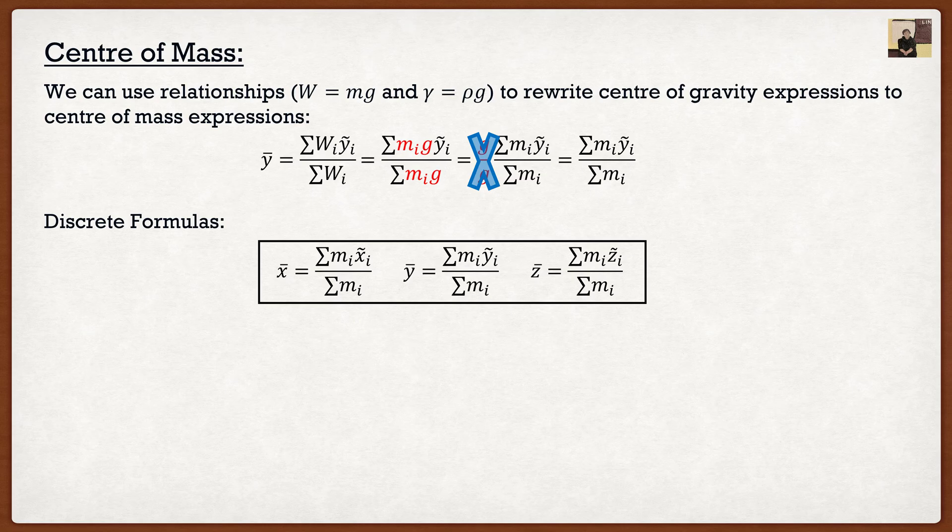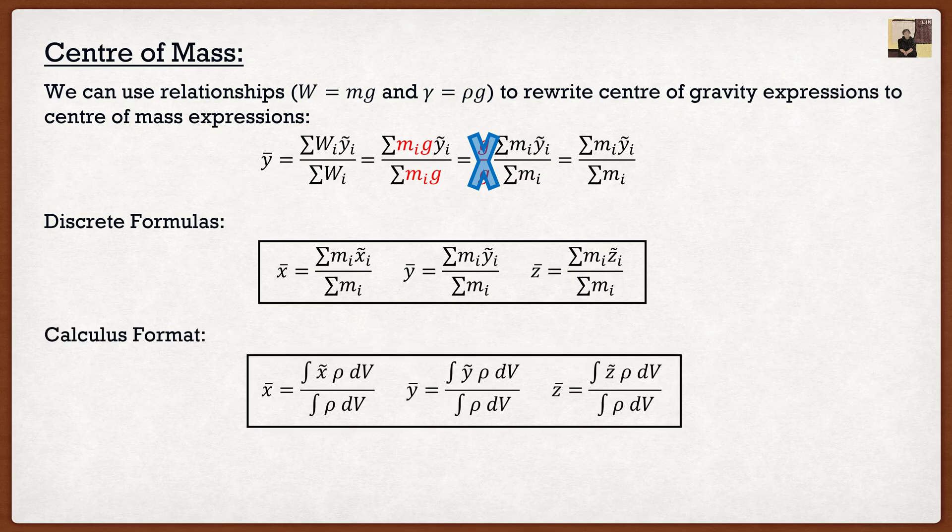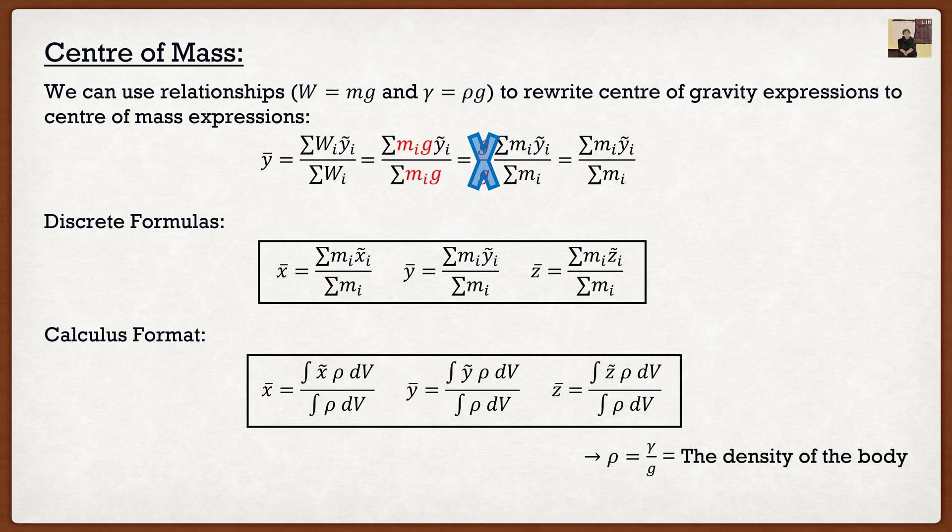Again they all look the exact same and then we can also switch it to a calculus format by utilizing that density relationship where rho is equal to gamma divided by g which is the density of the body. But here's kind of the fun fact.